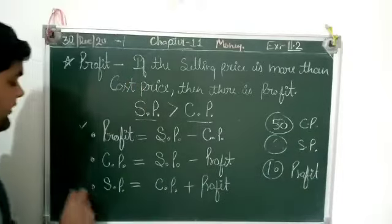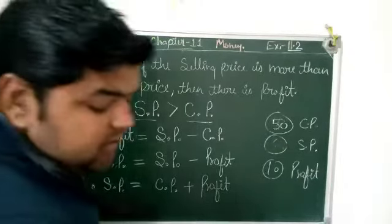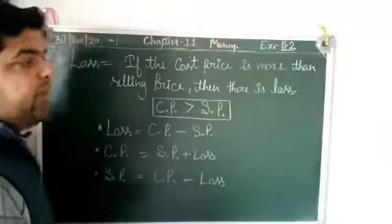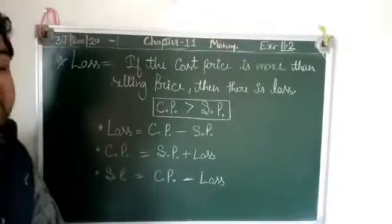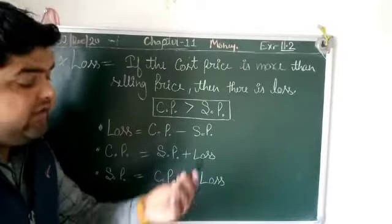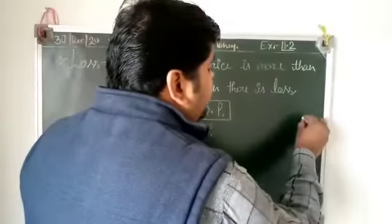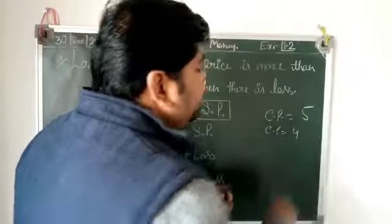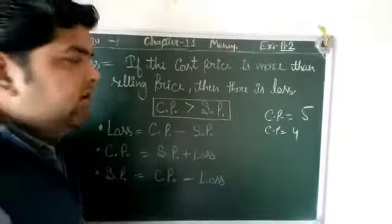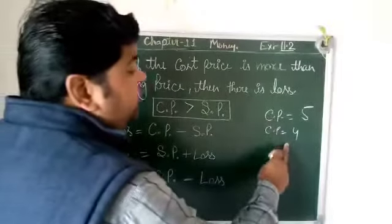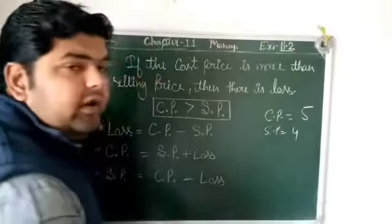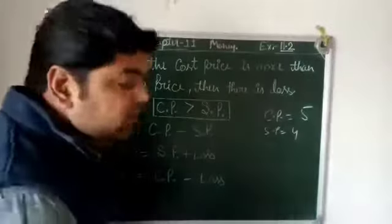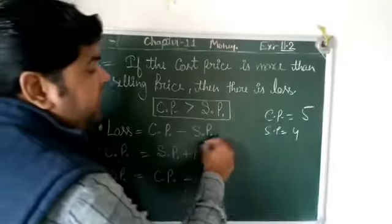Next point is Loss. If the cost price is more than the selling price, there will be a loss. When your cost price is bigger than the selling price — for example, CP is 5 rupees and you have to sell it for 4 rupees — then you are getting a loss.